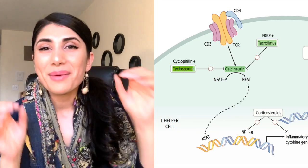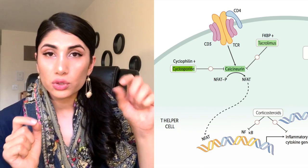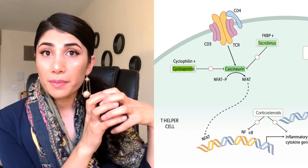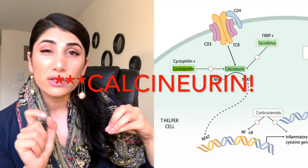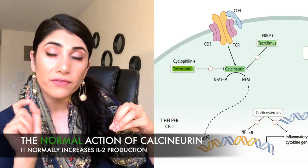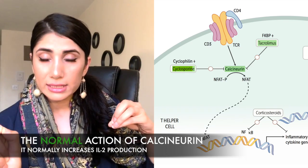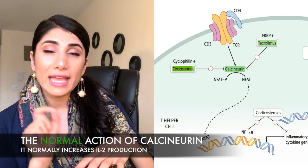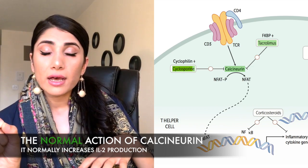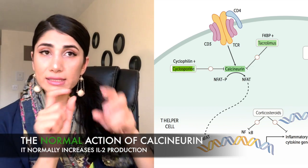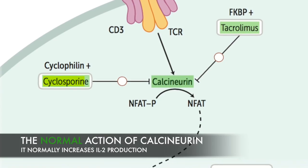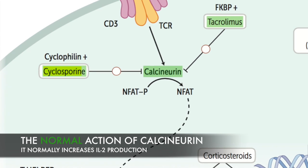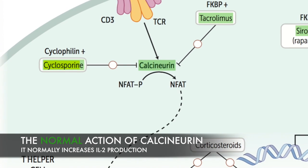Cyclosporine specifically binds to cyclophilin inside the cell. By binding with cyclophilin, it forms a complex that inhibits calcineurin. Calcineurin is a phosphatase — it dephosphorylates. Specifically, it dephosphorylates NFAT. NFAT is normally phosphorylated and needs to be dephosphorylated to enter the nucleus.